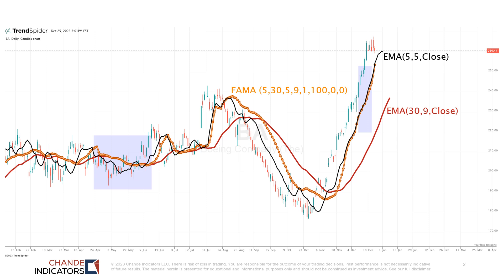The peach dotted line is FEMA, where the length varies between five and thirty days and the offset varies between five and nine days, to compare itself to the two lines on the chart. Of course, you can set any values you want here.